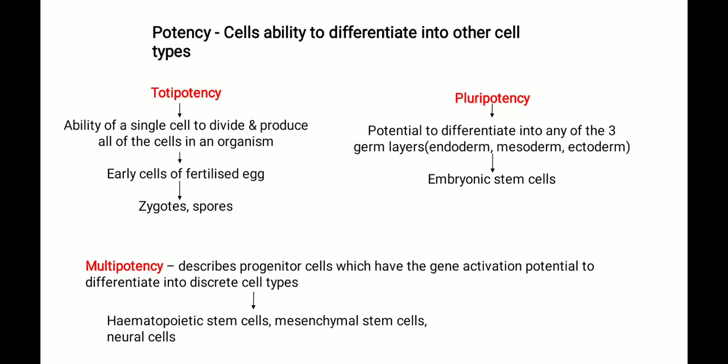Pluripotent stem cells are undifferentiated, unspecialized masses of cells. Next is multipotency, which describes progenitor cells that have the gene activation potential to differentiate into discrete — meaning special or separate — cell types. Examples of multipotent cells include hematopoietic stem cells, mesenchymal cells, and neural cells.